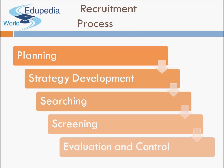The recruitment process steps are: planning, strategy development, searching, screening, and evaluation and control. First comes human resource planning — the HR department needs to understand how many people are required today and in the future, and whether there is a surplus or shortage of employees. If there is a shortage, you move to strategy development: thinking about where to get the right kind of employee — internal recruitment, a consultant, newspaper ads.